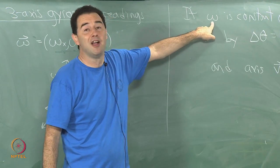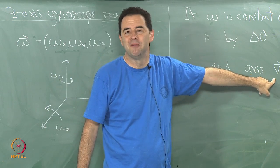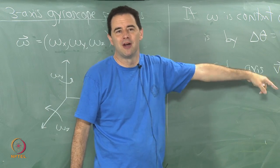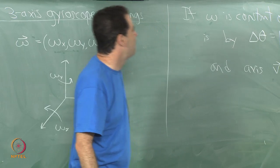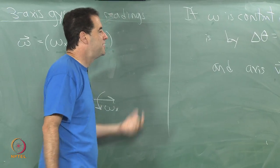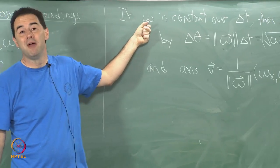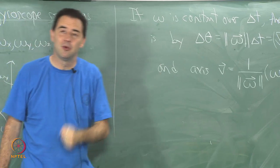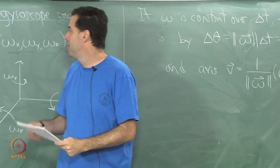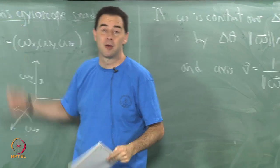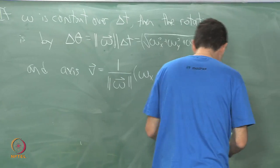This ends up being the axis of rotation during this interval delta-t. If omega were not constant, v would be changing and the approximation would break down. I'm assuming delta-t is so small that the change in omega is insignificant. Ultimately I get measurements of omega from my 3-axis gyroscope.